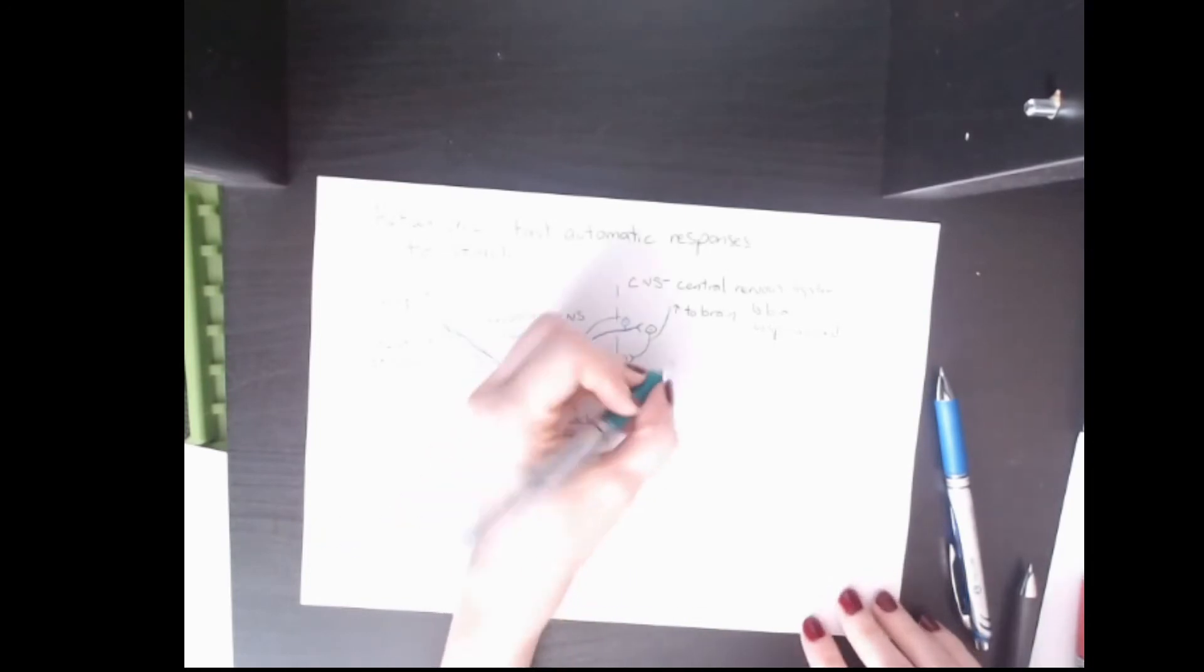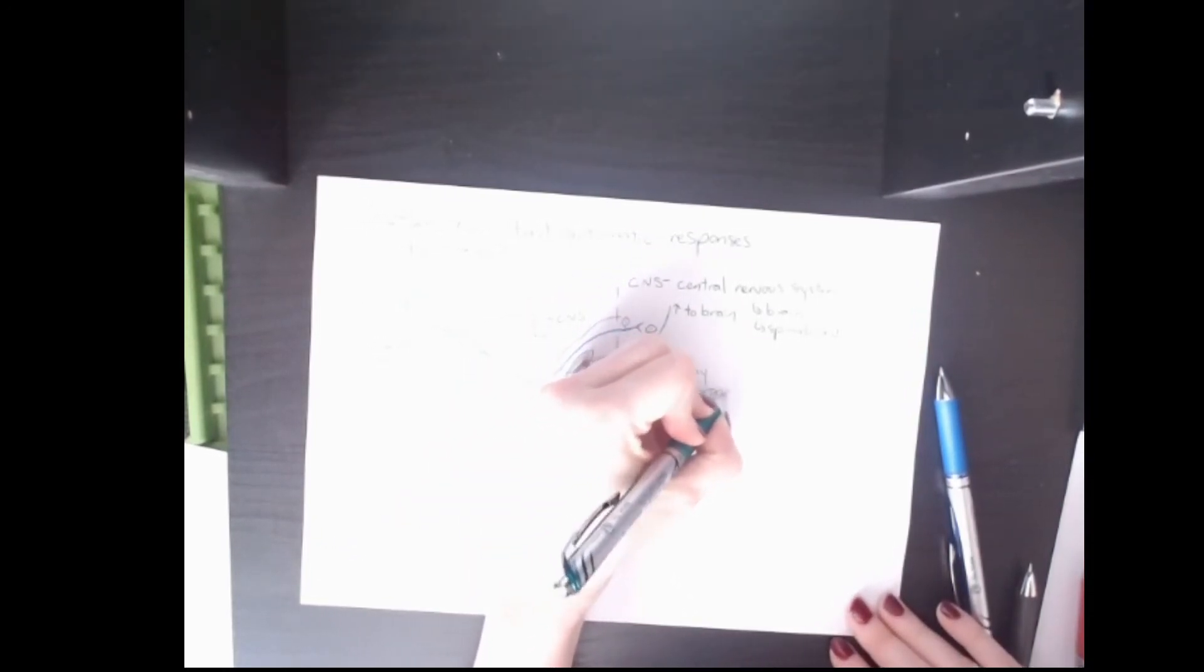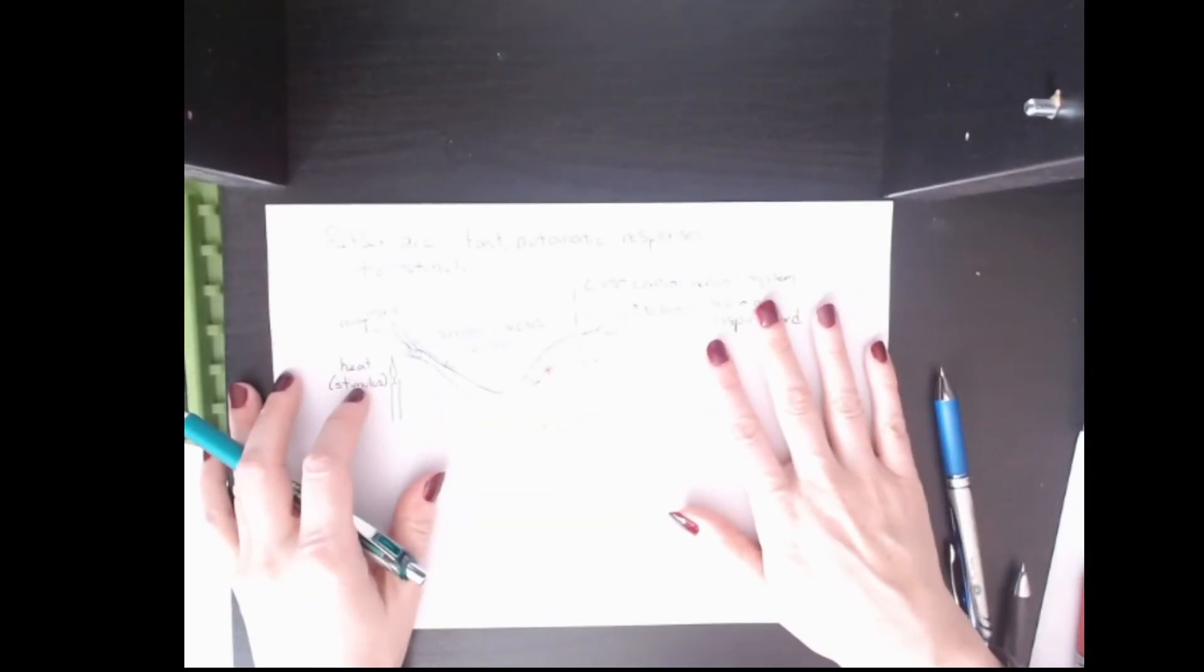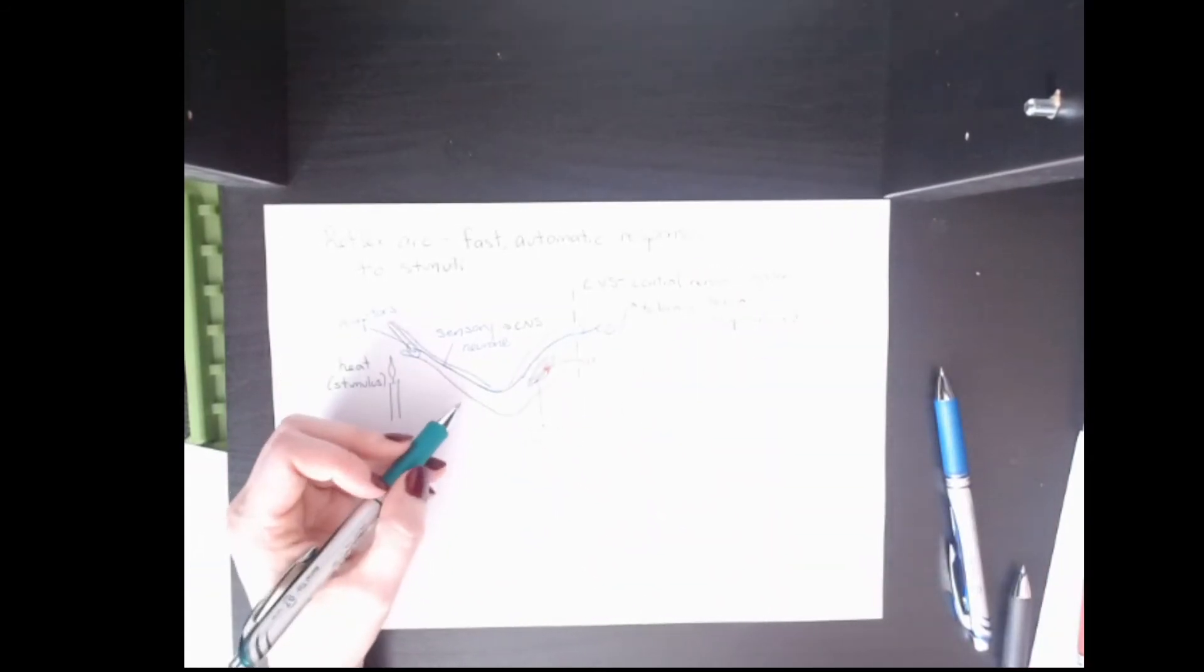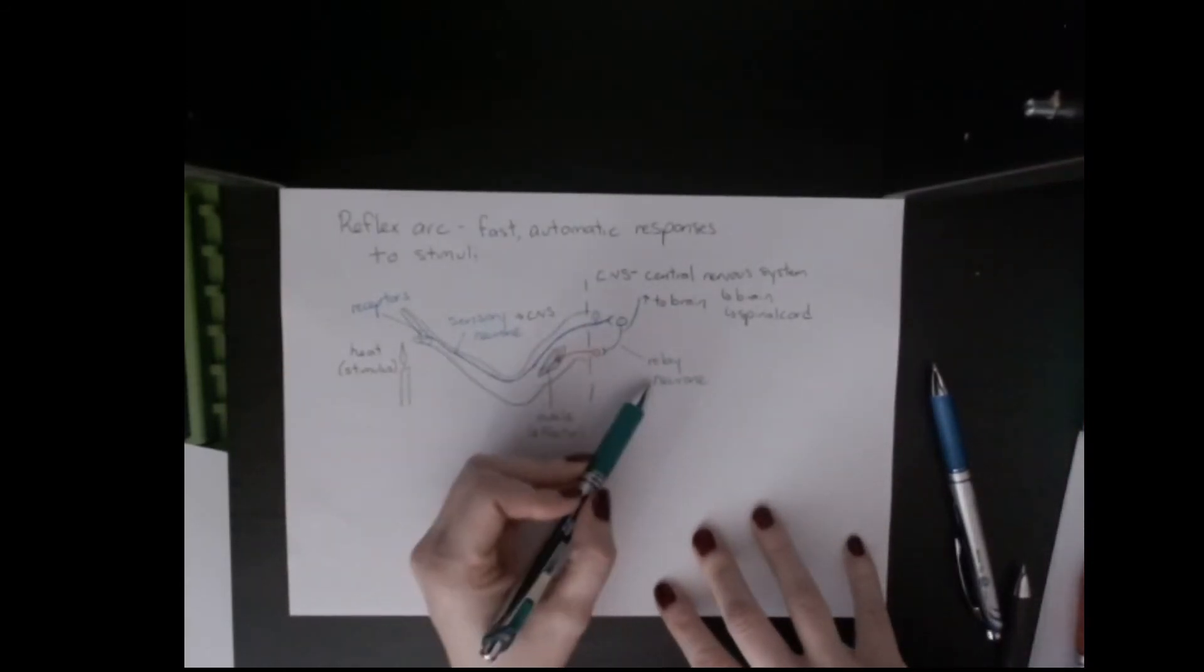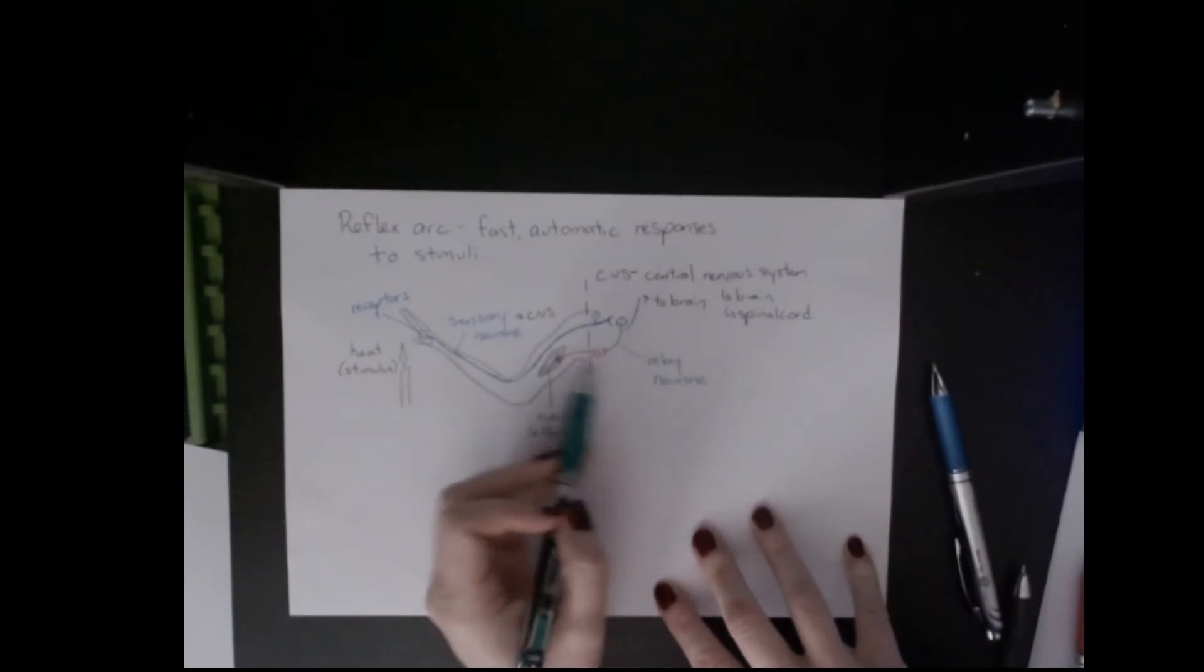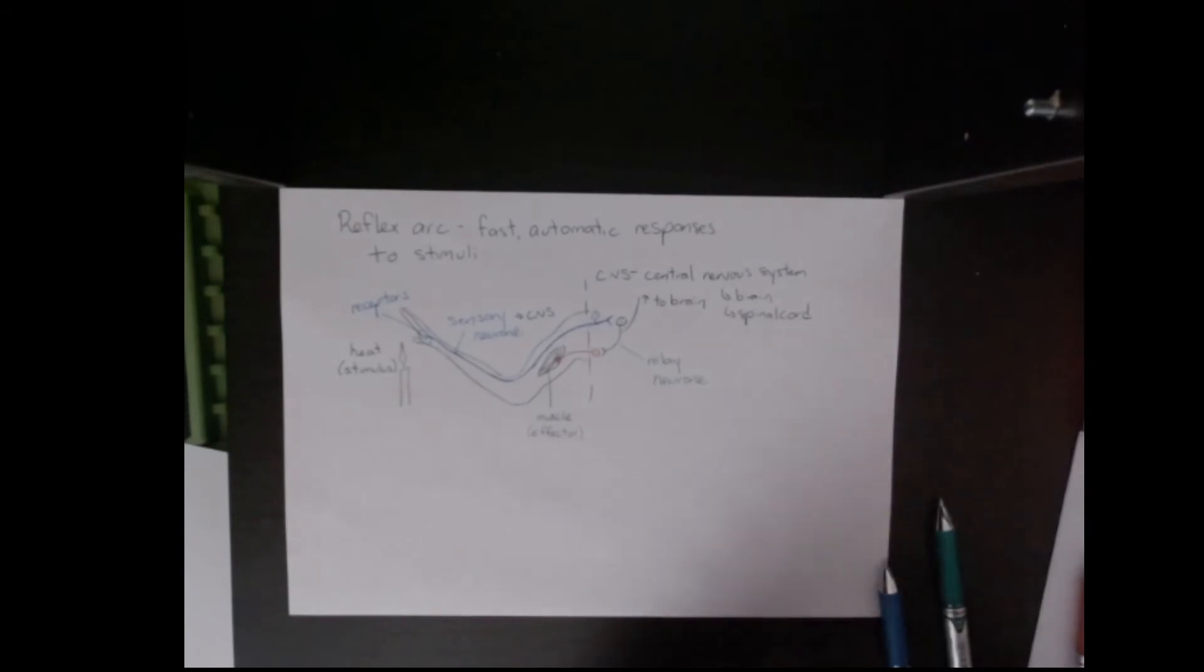From there it passes to what we call a relay neuron. The relay neuron, you'll notice, is quite short. The relay neuron is located entirely within the CNS. Remember that neurons are not connected.